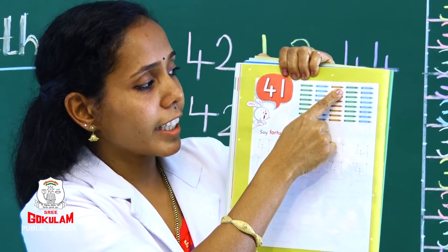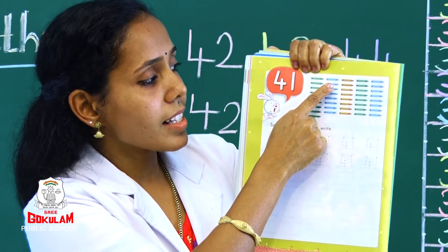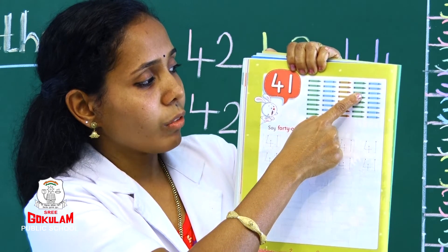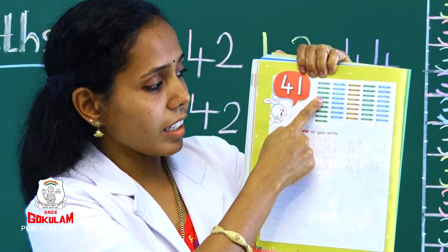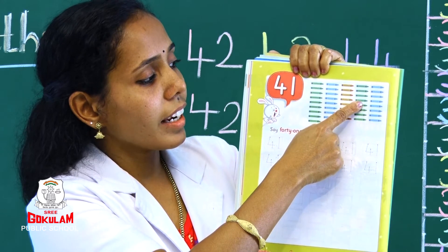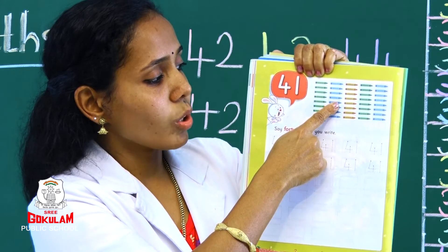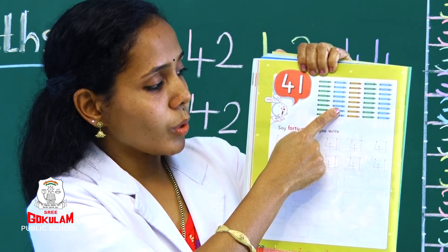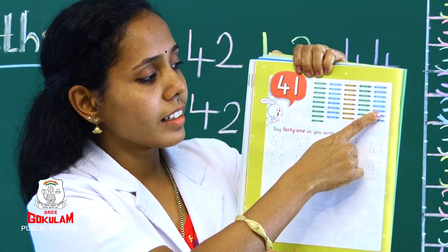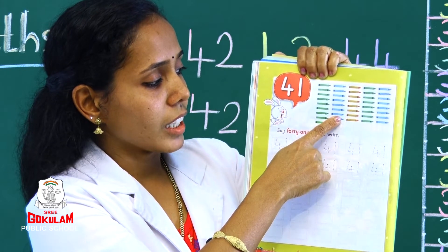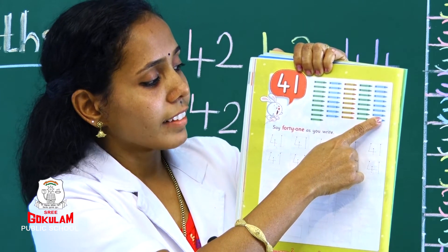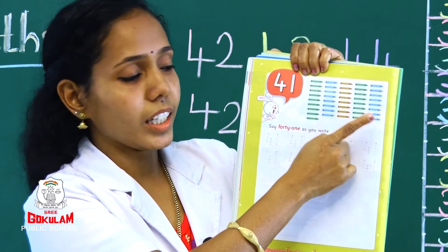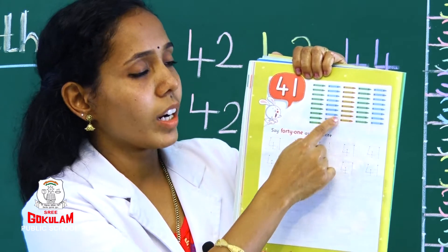Count with your crayons: one, two, three, four, five, six, seven, eight, nine, ten, eleven, twelve, thirteen, fourteen, fifteen, sixteen, seventeen, eighteen, nineteen, twenty, twenty-one, twenty-two, 24, 25, 26, 27, 28, 29, 30, 31, 32, 33, 34, 35, 36, 37, 38, 39, 40, 41 crayons. And all say 41 as you write.